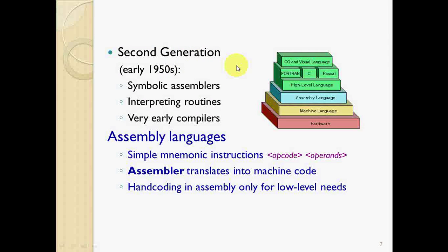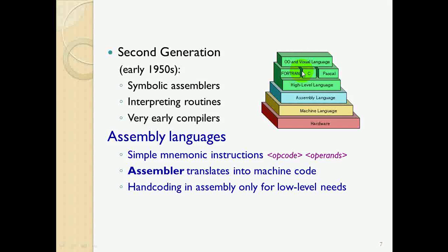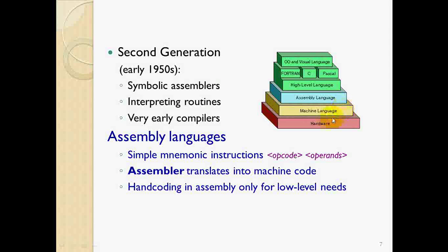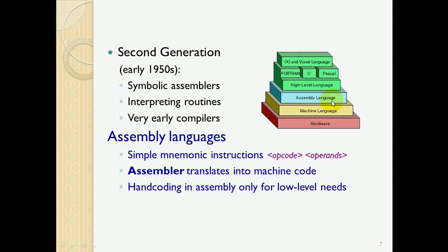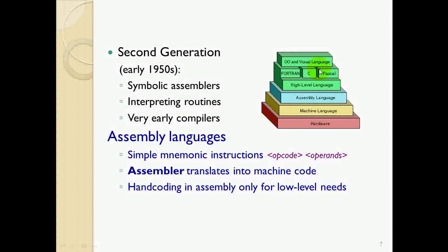The second generation emerged in the early 1950s with symbols, assemblers, and early compilers. The development went step by step: hardware machine language, assembly language, high-level language, FORTRAN, C, COBOL, and so on. Assembly language uses simple unique instructions that are easy to understand, and the assembler translates them into machine code, though it is not as fast as first generation languages.